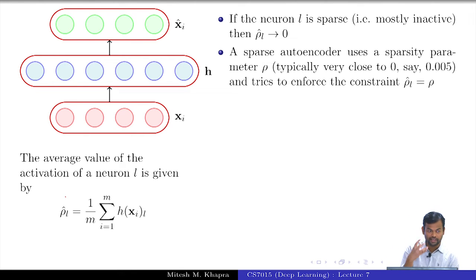On average neuron is going to be inactive. That means, wherever it is active, it is really going to capture some relevant information. So it is going to be active, whenever it is active it is going to adhere to certain patterns. So we are ensuring that each of these neurons adhere to a very few patterns and it has discriminative power in that sense.